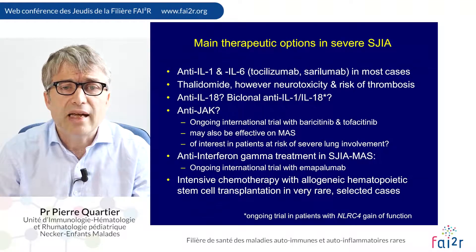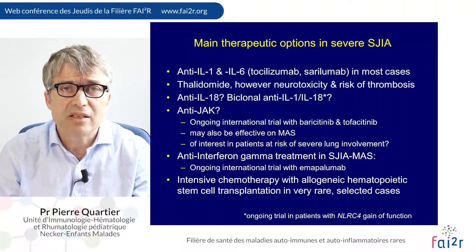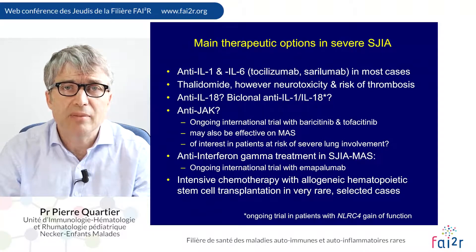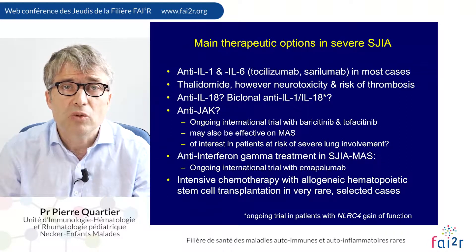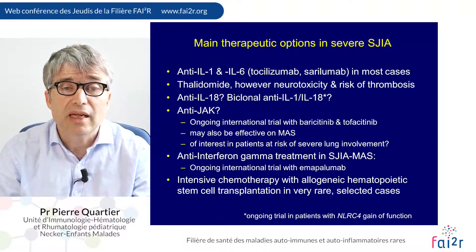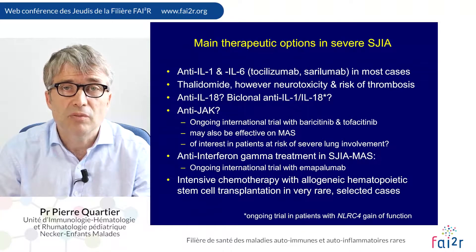In general, IL-1 and IL-6 blockers remain the main tools in severe systemic JIA. In some cases older drugs such as thalidomide are used, though they are quite toxic. There is hope for IL-18 inhibitors and bispecific IL-1 inhibitors in the future. JAK inhibitors are of particular interest as they may be active on systemic JIA and on the risk of macrophage activation syndrome, potentially preventing the lung disease seen in some patients. Ongoing trials include baricitinib, tofacitinib, and emapalumab for MAS. In a few selected cases, allogeneic bone marrow transplantation may need to be discussed.